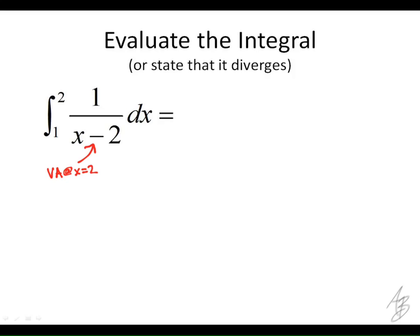So we have a vertical asymptote at x equals 2. So even though this is just a normal looking integral, if we were to take the antiderivative and try plugging in our limits, we're going to have a problem at 2 because it can't equal 2. It's going to be undefined there.